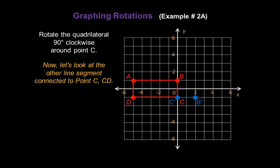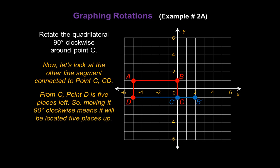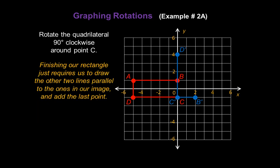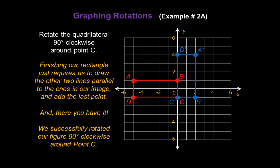Now let's look at the other line segment connected to point C: line segment CD. From C, point D is five places to the left, so moving it 90 degrees clockwise means it will be located five places up. And that end point will be D prime. Now finishing our rectangle just requires us to draw the other two lines parallel to the ones in our image. We can do that right now and then add the last point, which is A prime. And there you have it — we've successfully rotated our figure 90 degrees clockwise around point C.